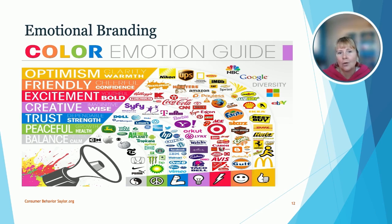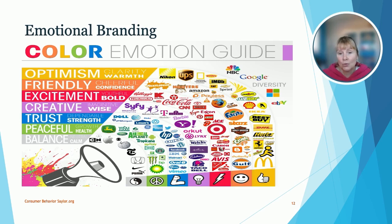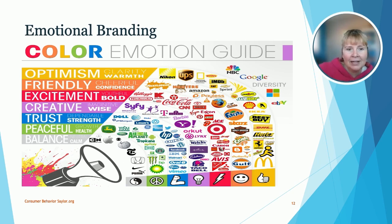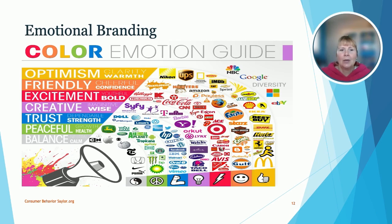Excitement — shown in red — includes Coca-Cola, Target, Exxon, CNN, and Kellogg's. Then you have Creative and Wise brands: Sci-Fi, Barbie, and Taco Bell. Then Trust — brands that have worked hard to gain customer trust — includes Dell Computers, Lowe's, HP, and Walmart. Peaceful or health-related brands include John Deere, Tropicana, and Whole Foods, as that's part of their mission statement. And then Balance — Cartoon Network, Puma, Nike, and Honda — these are your calmer brands.